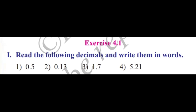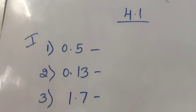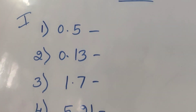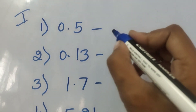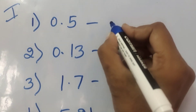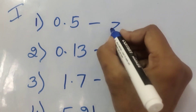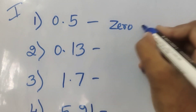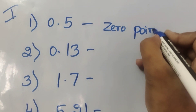Let's go to Exercise 4.1, first section. Read the following decimals and write them in words. First question: 0.5 — write this in words.